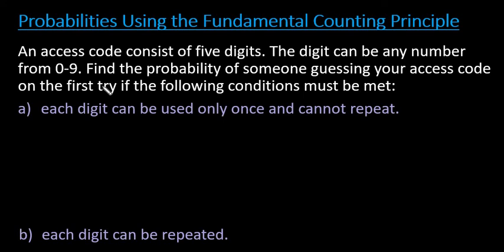Hi, for this video what I want to do is go through finding probabilities using the fundamental counting principle. So what we have is an access code consists of five digits. Those digits can be any number from zero to nine and we're going to find the probability of someone guessing your access code on the first try if we have the following conditions.